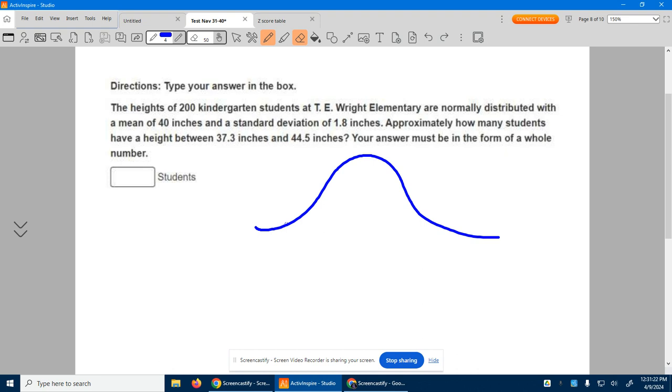With a mean of 40, so in the dead center we have 40. Standard deviation of 1.8. So if we go over 1.8 this direction, back 1.8 this direction, and we could keep going by 1.8.